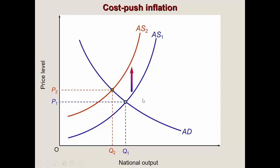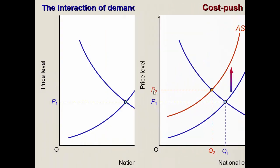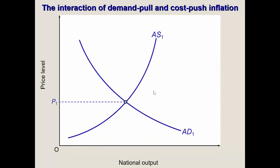The demand curve could continue shifting to the right if the economy keeps growing. This happened between 2002 and 2007 until the property bubble and financial crisis — there was continuous aggregate demand shift. But at very high prices, it became impossible to afford houses or sustain high wages, and eventually the economy collapsed.